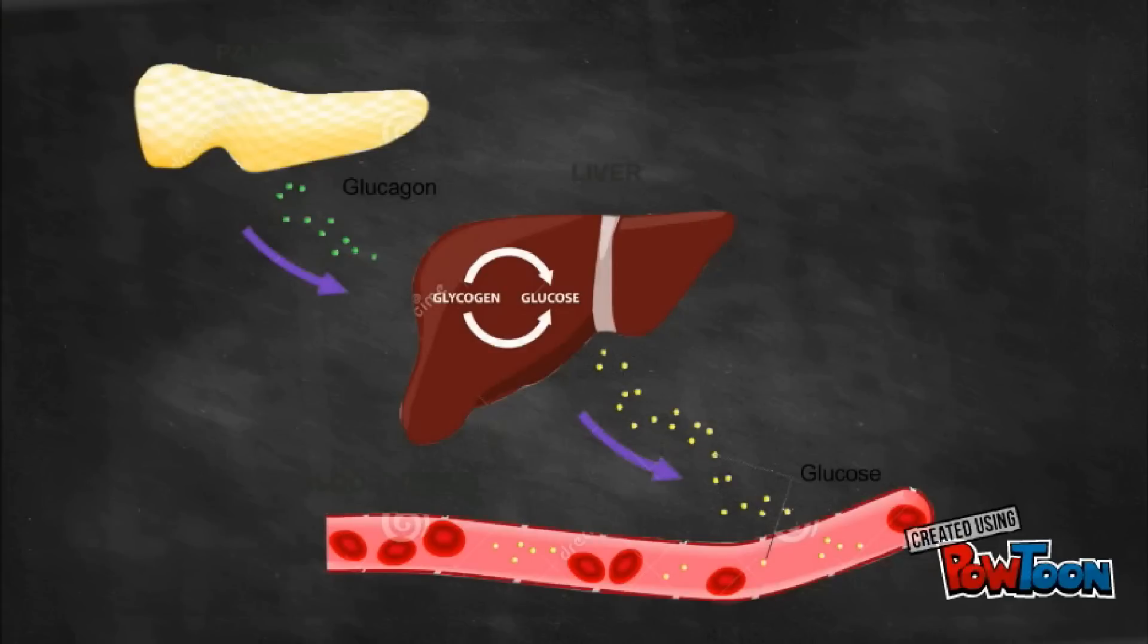These mechanisms are glycogenesis, the conversion of glucose to glycogen for storage, and glycogenolysis, the conversion of glycogen back to glucose for utilization.